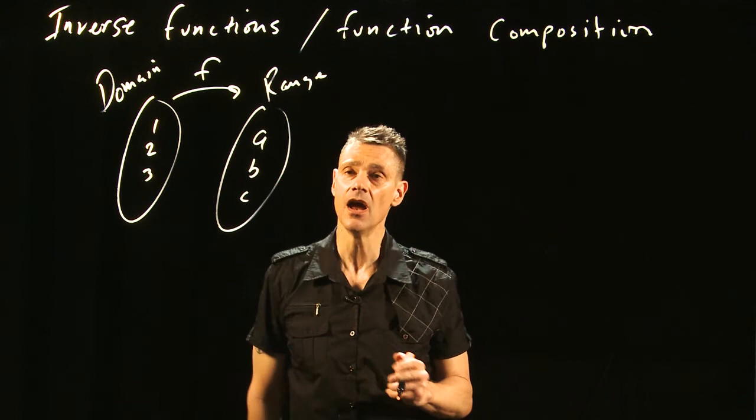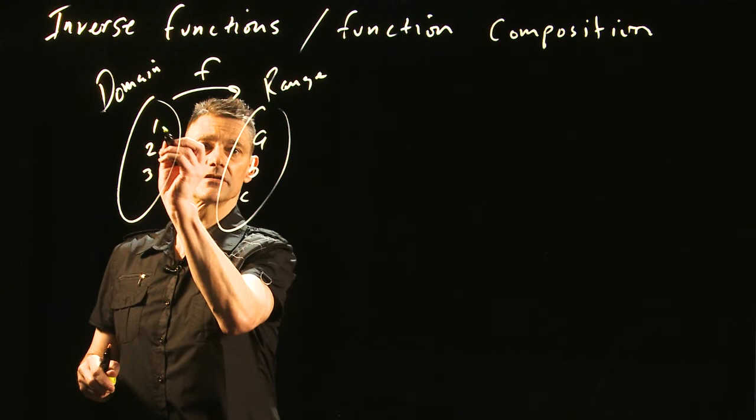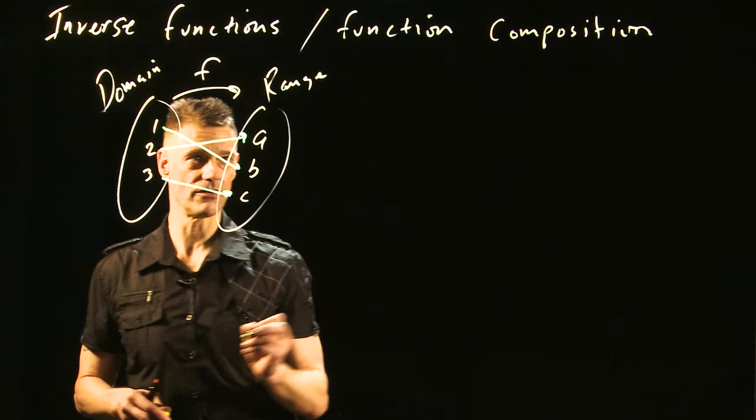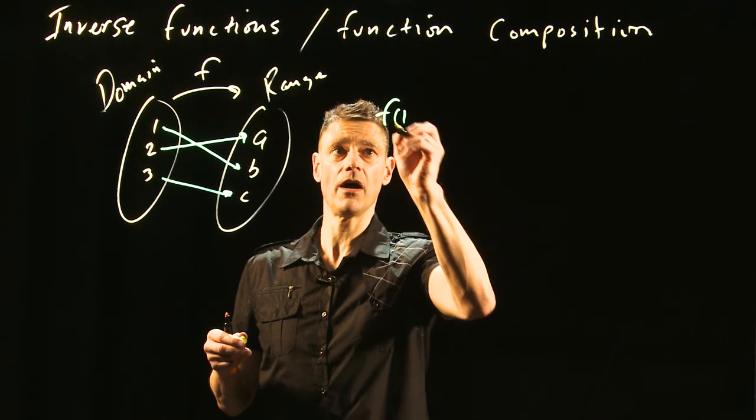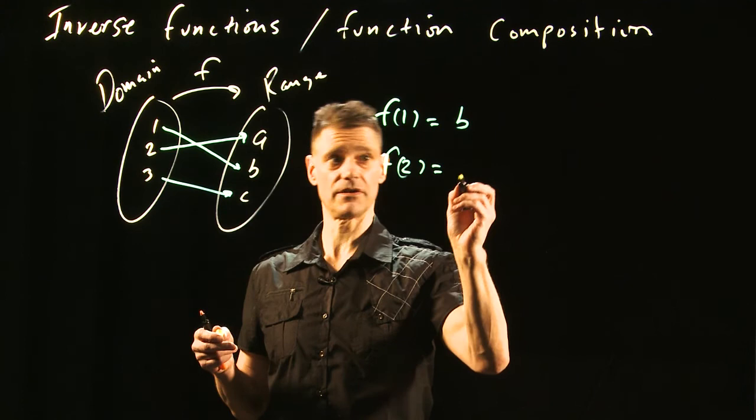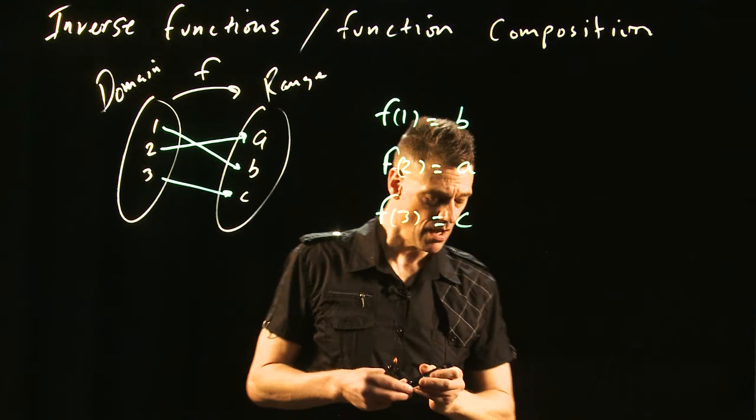Suppose we have this ordering. Let's let 1 go to B, and 2 can go to A, and 3 go to C. So you could organize this function like this: f of 1 equals B, f of 2 equals A, and f of 3 equals C.